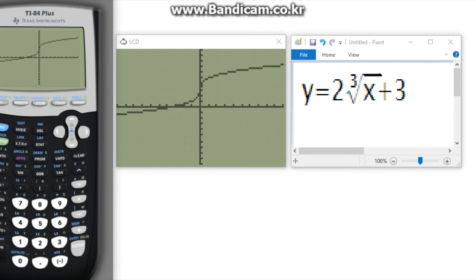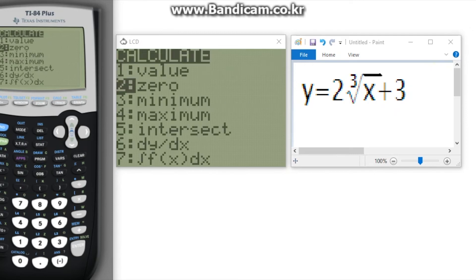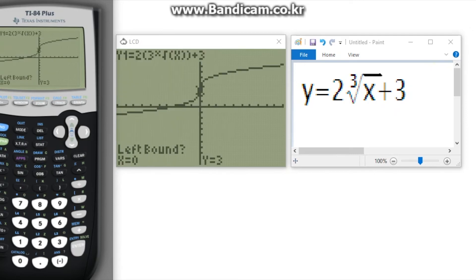Like the last example, to find the zero, go to 2nd trace and the calculate screen will pop up. Click 2nd for zero and from here you will be asked to find the left bound point and the right bound point. Just find a point under the x-axis and then a point above the x-axis to find your zero.